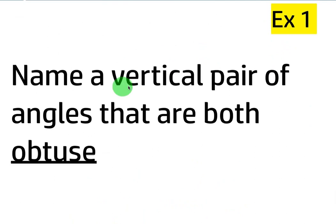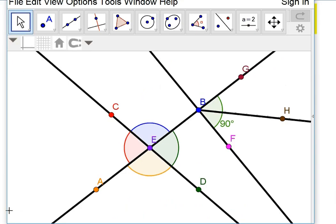So, it says, name a vertical pair of angles that are both obtuse. Now, we've already learned these in a previous lesson, obtuse being bigger than 90. So, we have to find two angles that are bigger than 90 and are a vertical pair.